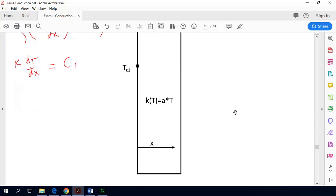And now we will make the substitution that k is equal to at. So now we get a times t dtdx is equal to c1. And if we separate again now we get at times dt is equal to c1 dx.